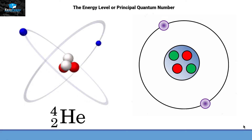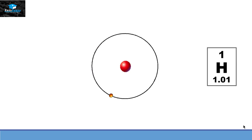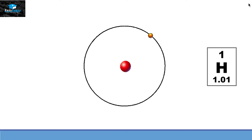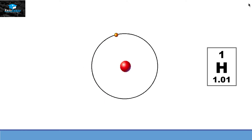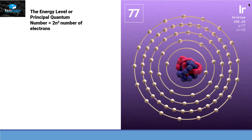To understand a shell, let's start with the hydrogen atom, the simplest atom of all. Hydrogen has one proton and one electron revolving around the nucleus. This electron does not stay at one position all the time — sometimes it can be here, sometimes there. But about 90% of the time this electron is detected within a certain range, and that's the energy level or principal quantum number of hydrogen.